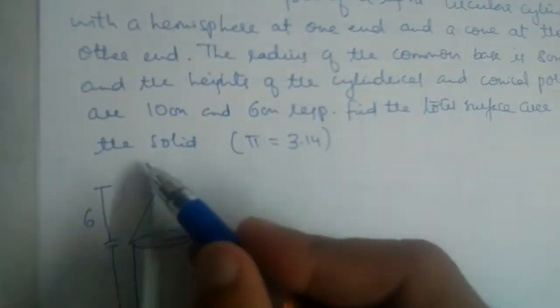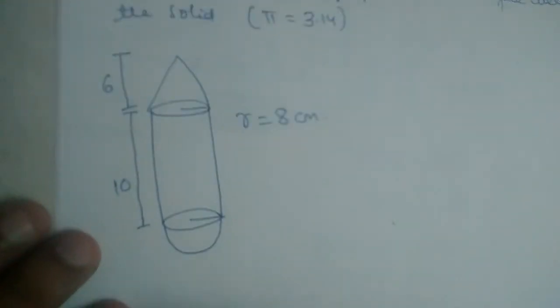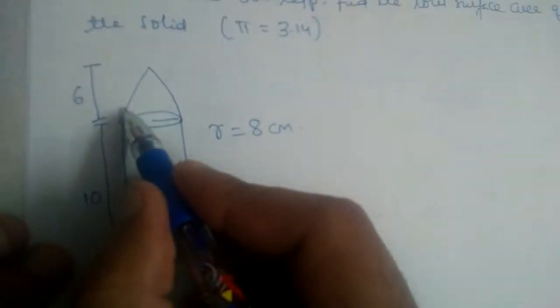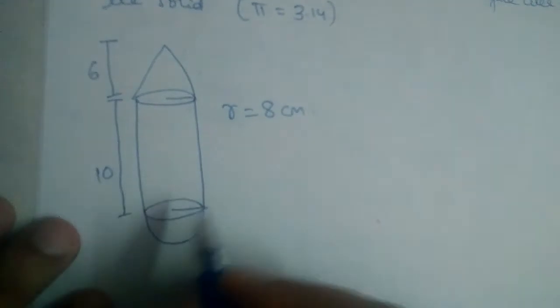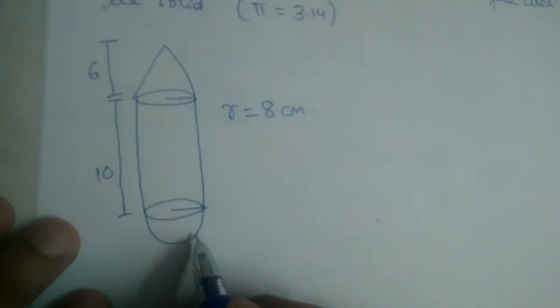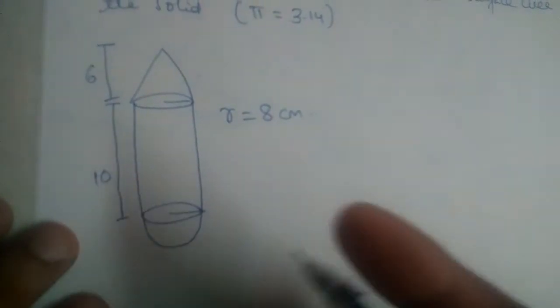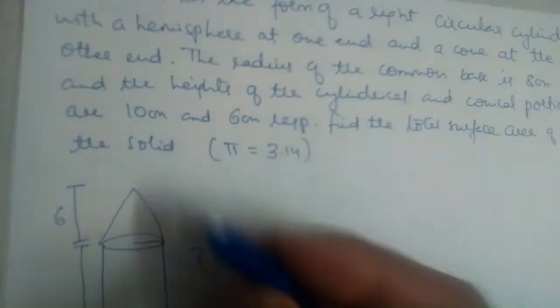Find the total surface area of the solid. We should find the curved surface area of this cone, curved surface area of hemisphere and curved surface area of cylinder. That will give us total surface area of the solid.